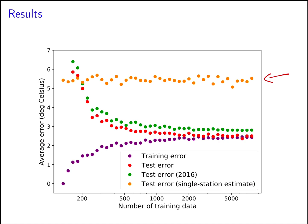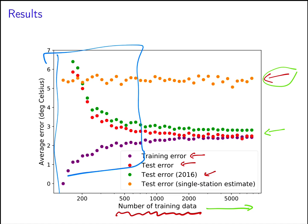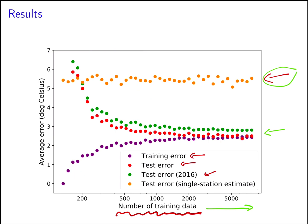Here we have the number of training data on the x-axis — I'm fitting a model using different amounts of data from 2015 to see what happens to the error. The training error is in purple, the test error is in red, and the 2016 test error is in green. As we go to the right with more and more data, we converge to an error of approximately two and a half degrees Celsius, which is much better than using a single station. There's something quite interesting going on in this region where the test error goes down and the training error increases — we're going to explain this in detail by analyzing some mathematical models in the next videos.